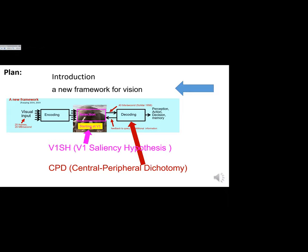The V1 Saliency Hypothesis proposes that visual attentional selection starts right at V1. If V1 is guiding attention, and attention is what selects those 40 bits per second, then whatever is selected by attention is placed in the central visual field by a saccade. This means decoding and recognition will be qualitatively different between central and peripheral vision — giving rise to central-peripheral dichotomy.